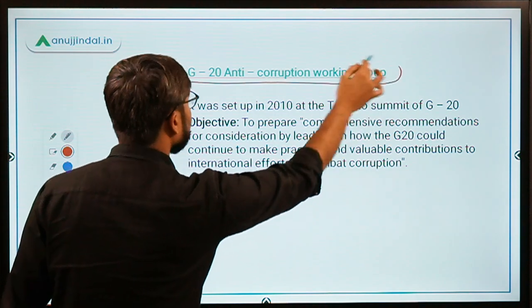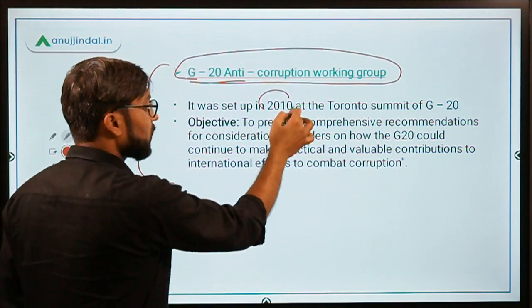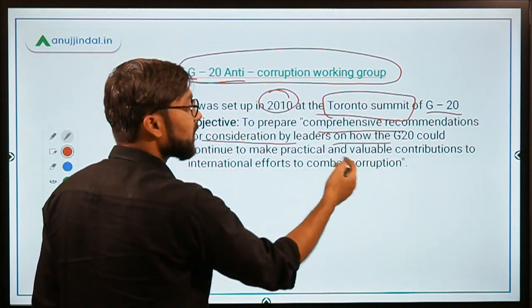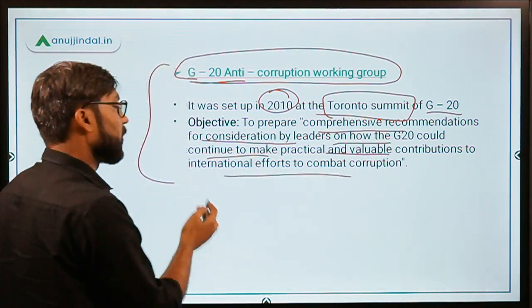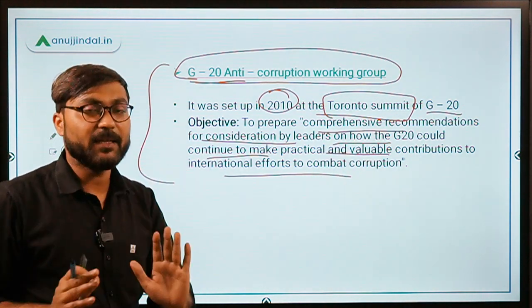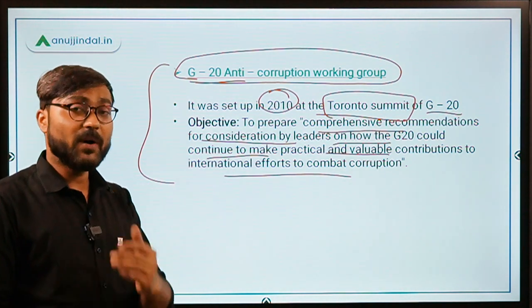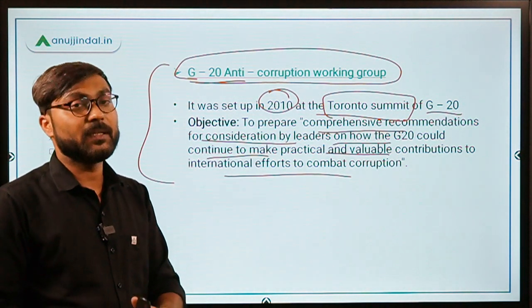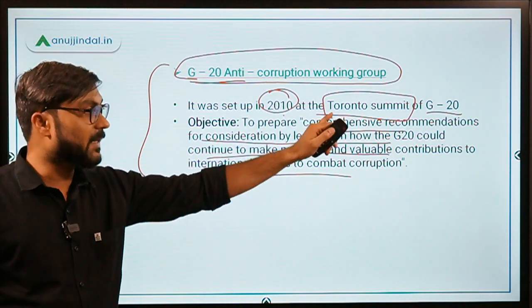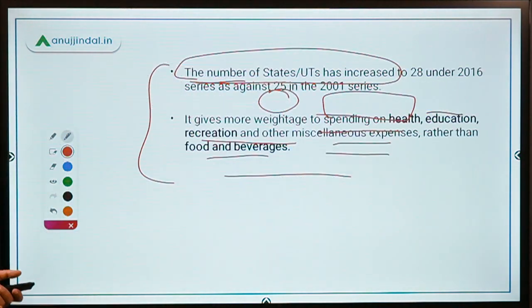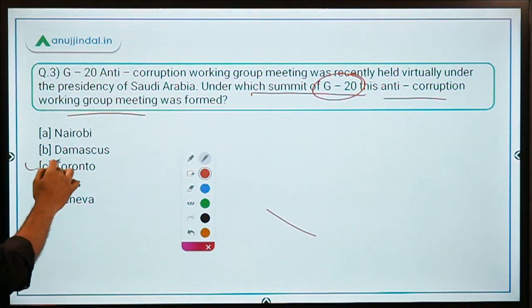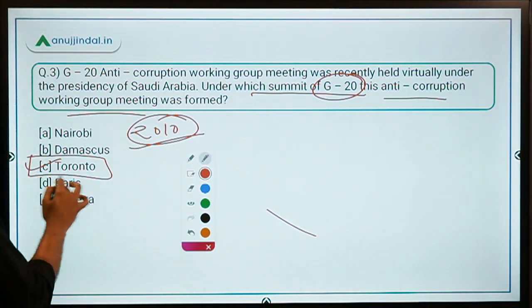The G20 Anti-Corruption Working Group was set up in 2010 at the Toronto Summit of G20. Its objective is to prepare comprehensive recommendations for consideration by leaders on how the G20 could make practical and valuable contributions to international efforts to combat corruption. The answer to the question is the Toronto Summit in 2010, so option C is the correct answer.